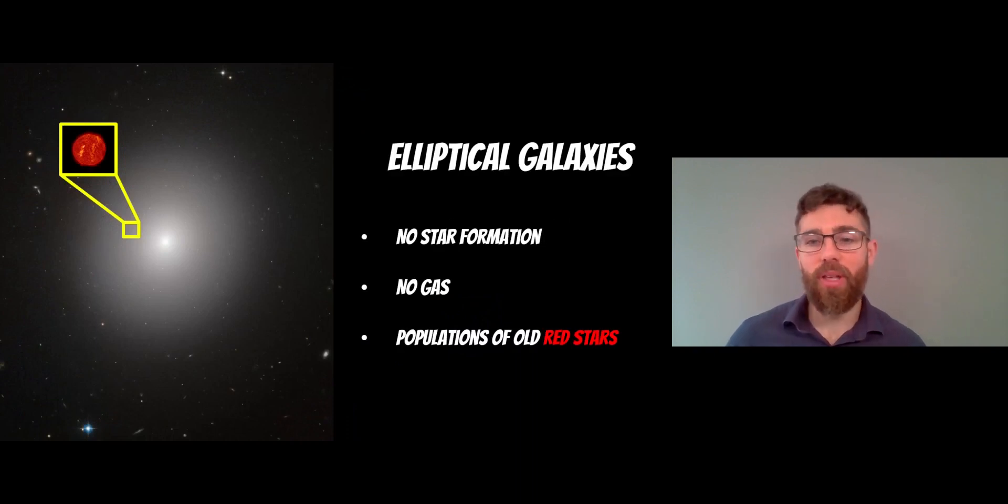Now, elliptical galaxies, they don't have any current star formation or recent star formation. There's no gas in there, so they can't actually form any new stars. And they have populations of red stars. And then the most obvious thing, they don't have spiral arms.